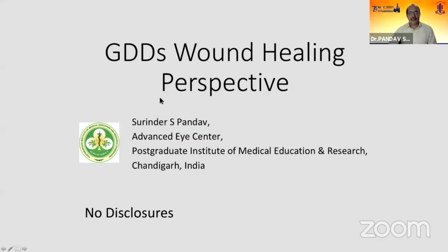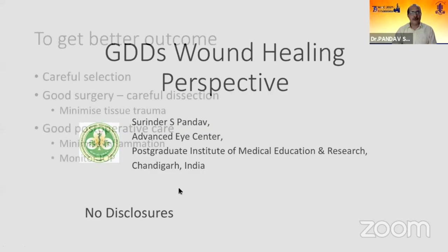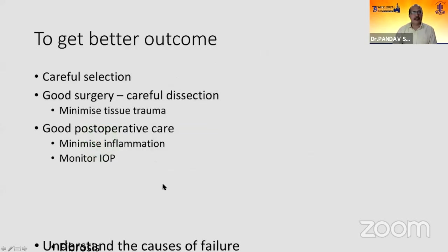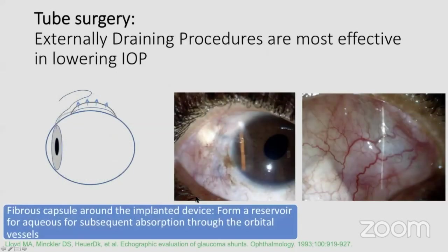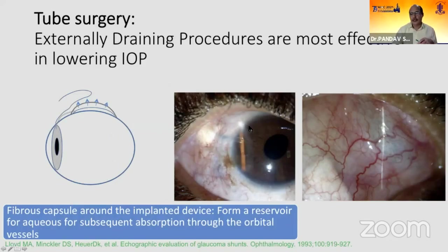So, I'm sorry about that. We are talking about wound healing, and understanding it is important. We are basically creating a bleb which is away from the limbal area, but it is still a bleb and goes through all those dynamics of how a bleb is formed.